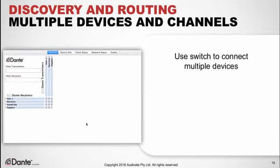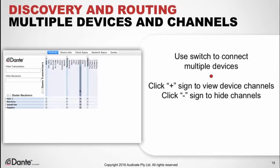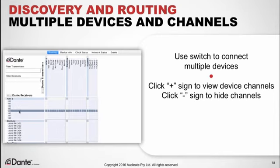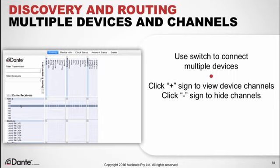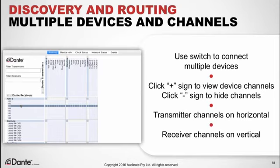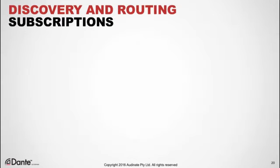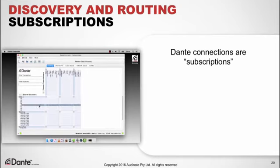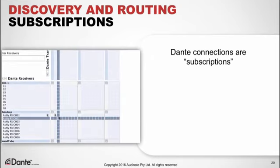Now that we can see two or more devices, we can make a connection. Click the plus sign by the words Dante Transmitters and Dante Receivers to reveal the individual channels for all devices, and you can click the plus sign by each device name to open channels for only that device. Most Dante devices are both transmitters and receivers — analogous to sources and sinks. The transmitter channels will always appear on the horizontal axis and the receivers on the vertical.